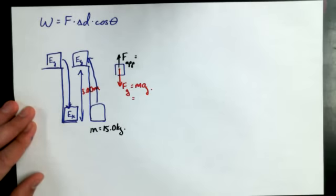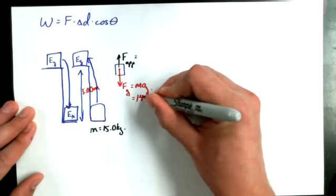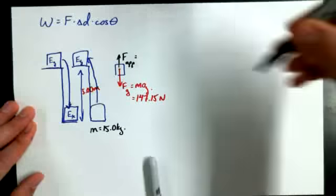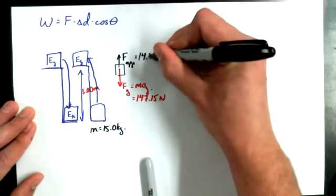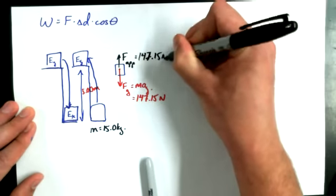10 times 9.81. Sorry, not 10 times 9.81. 15 times 9.81. I need a little bit of help. What's 15 times 9.81? Is it 147.15? Yeah? 147.15 newtons. And so this has to be 147.15 newtons.